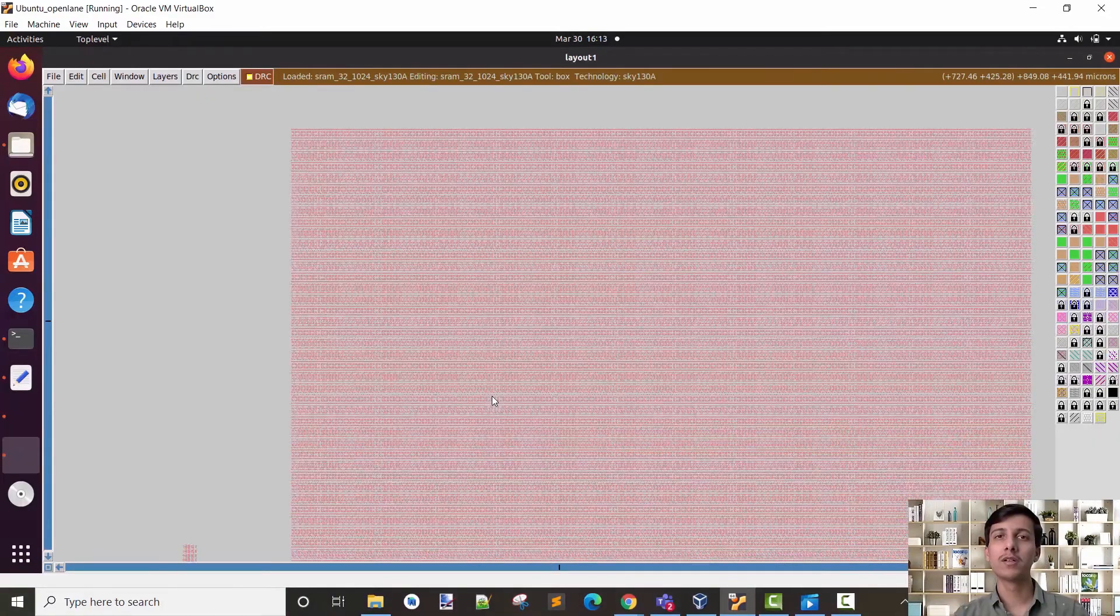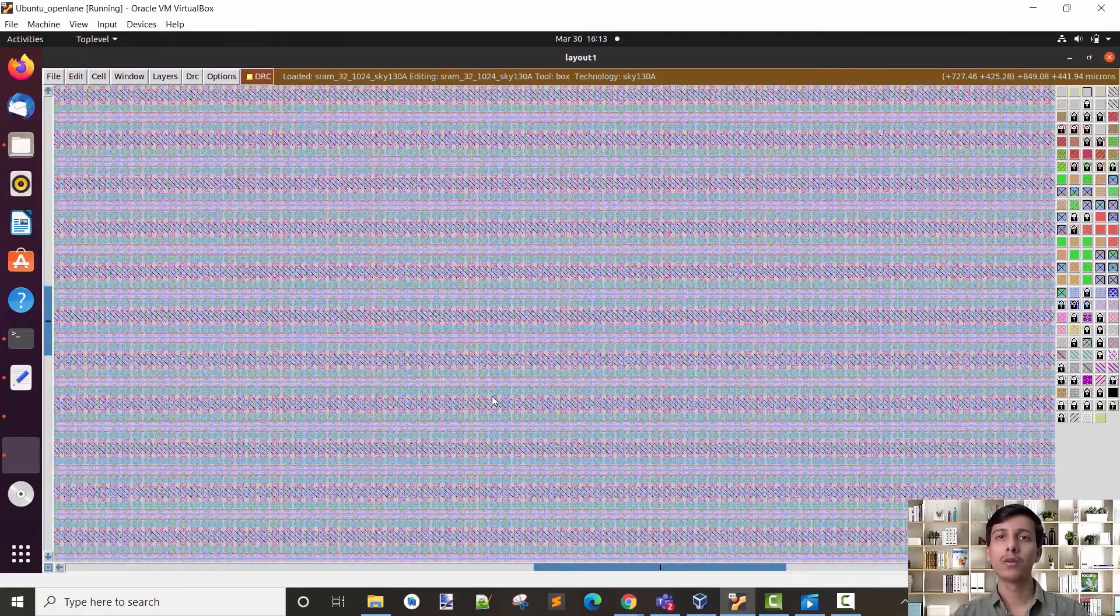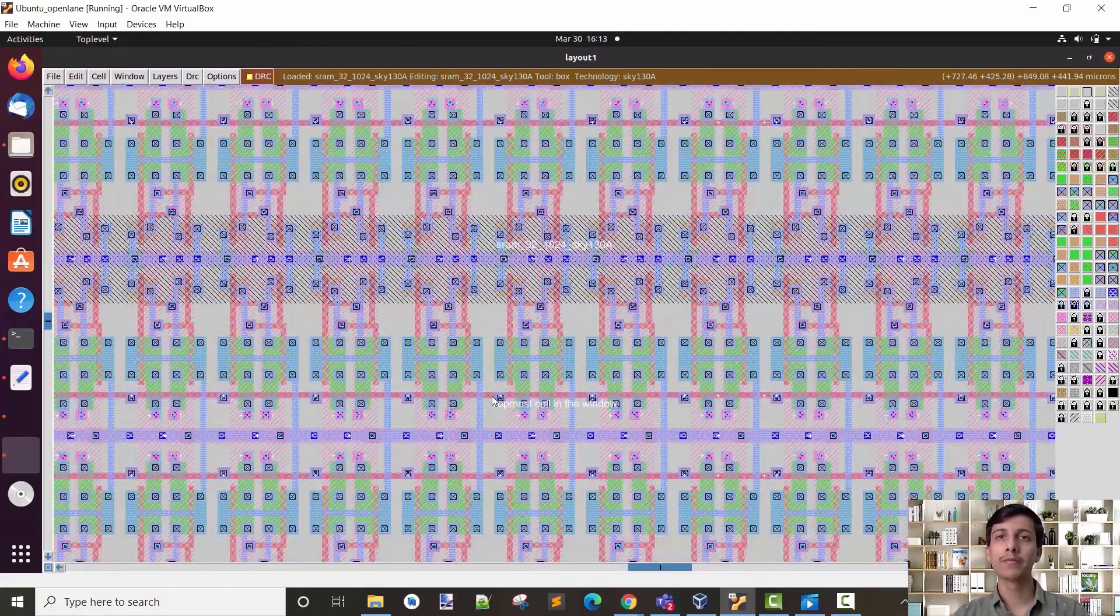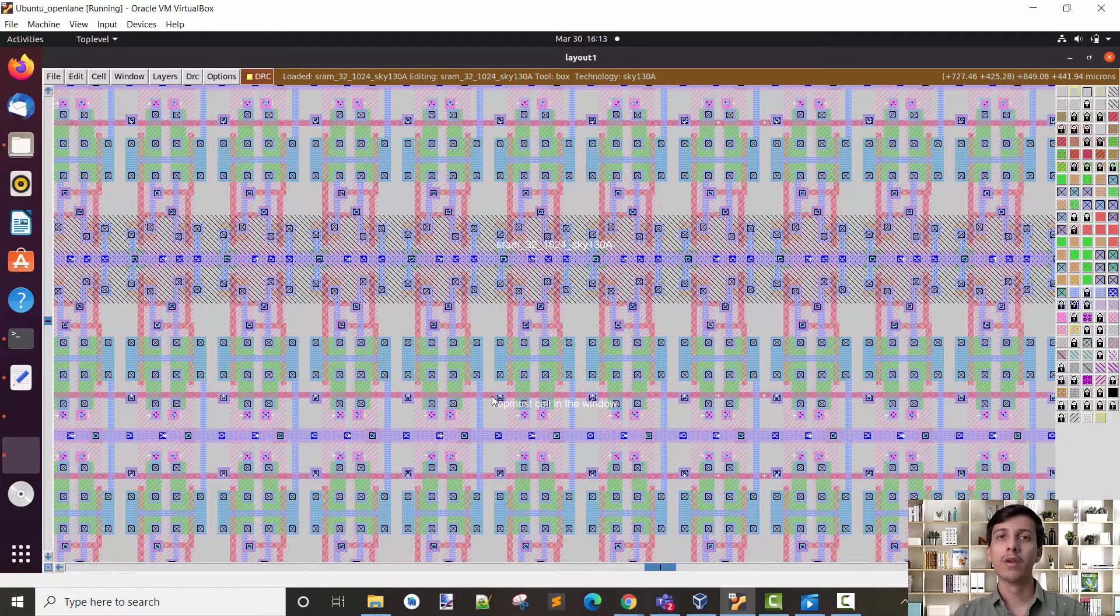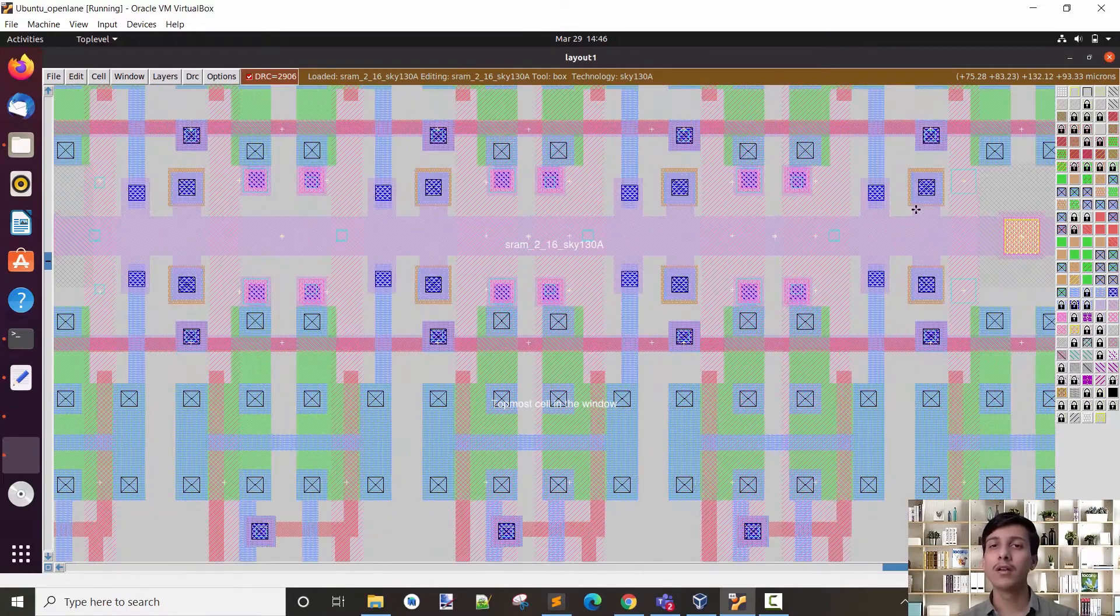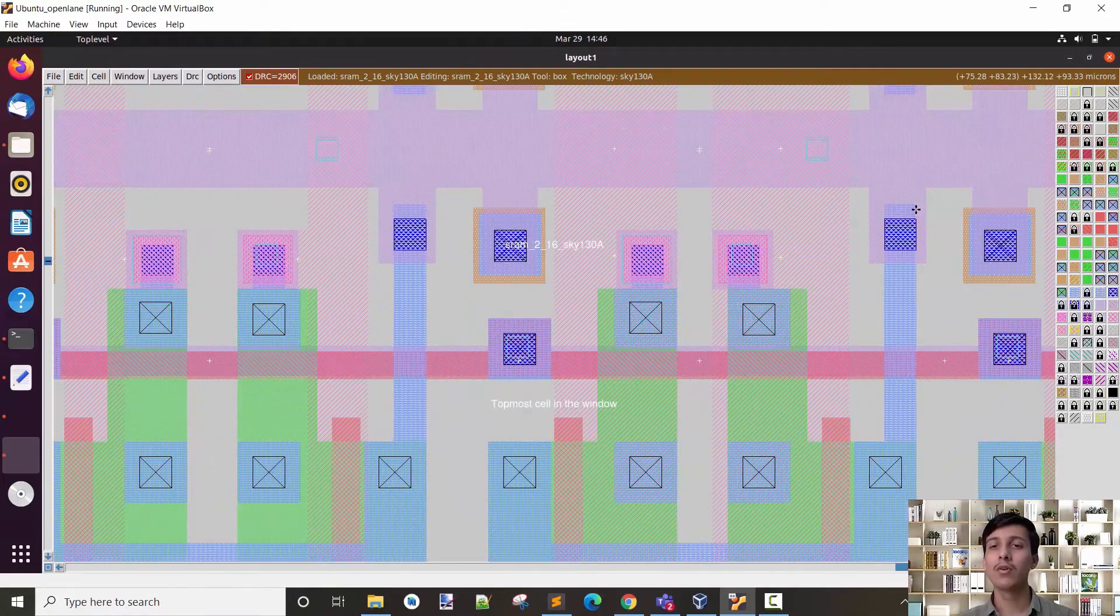We can see the 32x1024 memory array. Let's zoom in. We can see the arrangement of the SRAM cells, the dummy and replica cells. If we zoom at the SRAM cell array, we can see that the DRC errors are now gone.